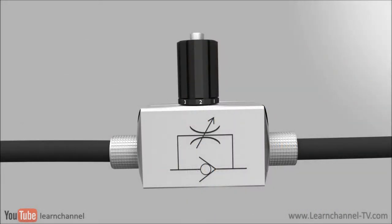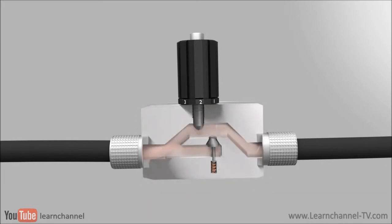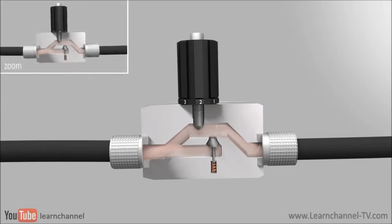The function of a flow valve is to reduce the rate of flow in its leg of the circuit. Flow reduction results in speed reduction at the actuator. For an example of an actuator, here is a cylinder.